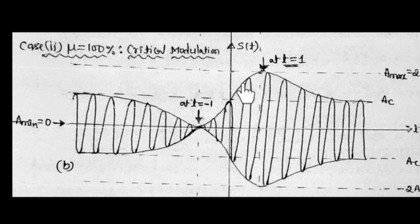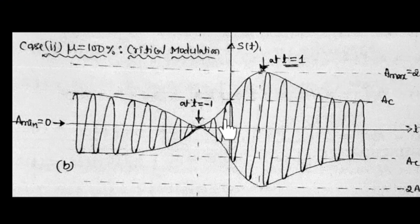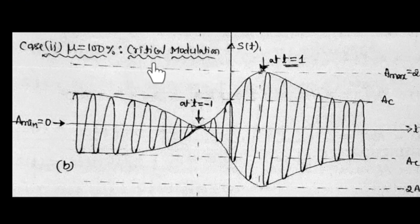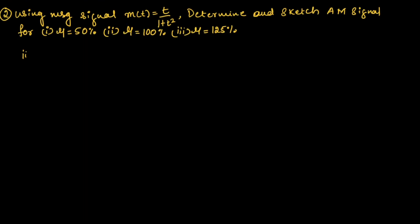We got the maximum value at t = 1 and minimum value at t = −1. The lower envelope has similar values. Since the minimum amplitude value is 0, this type of modulation is called a critically modulated signal.